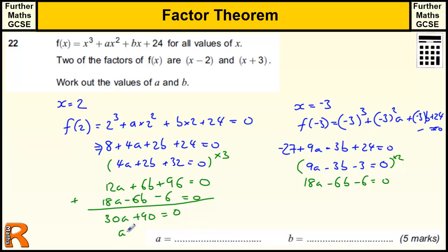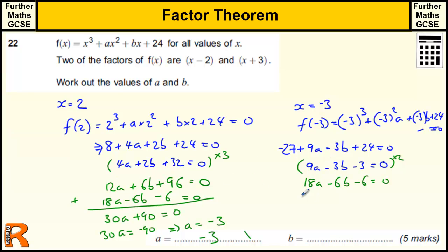So 30a equals minus 90, which tells me that a equals minus 3. That's the first answer. Once we have that, we can put it into any of the equations we've got so far to find out what b is going to be.